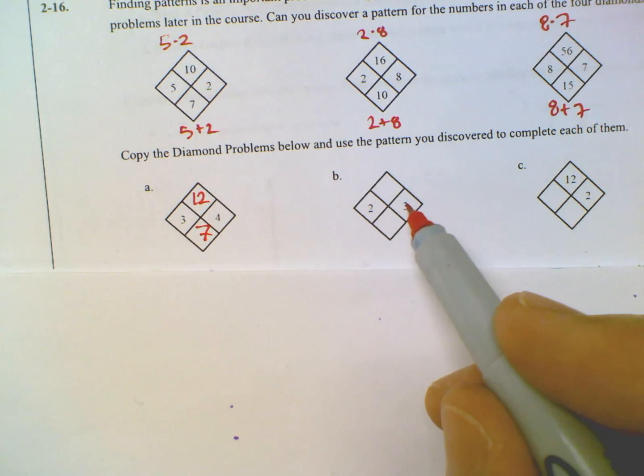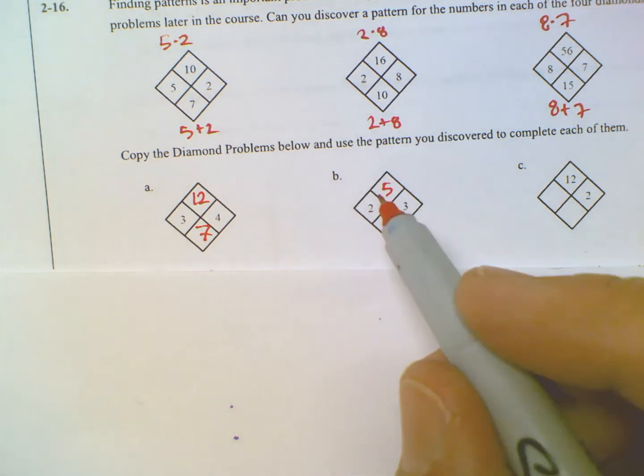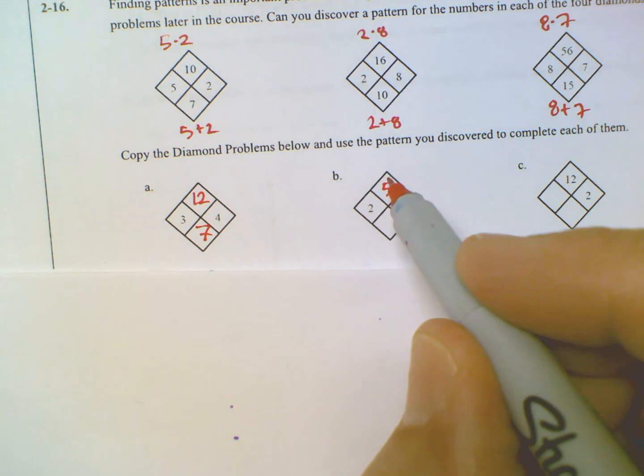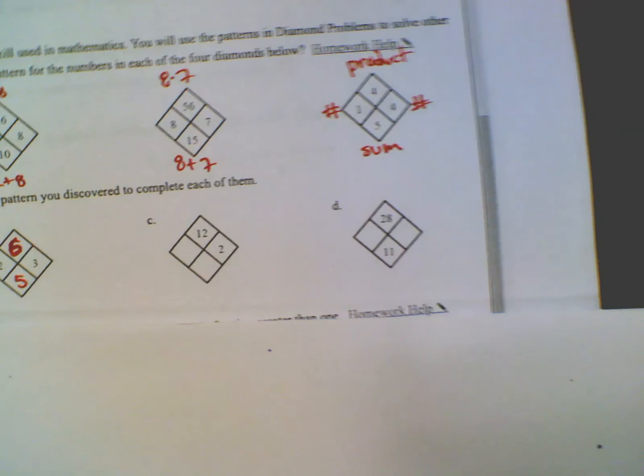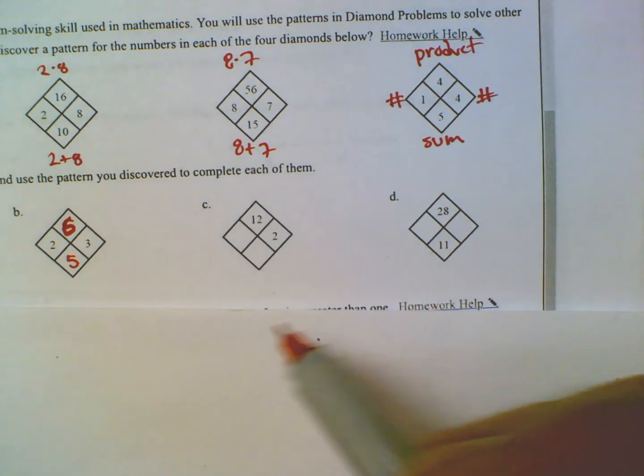This one here, 2 plus 3 is 5. Whoa, oops, I did it wrong. See, look at that. It's 2 times 3 on top is 6. And then 2 plus 3 on the bottom is 5. Okay? Product on top, sum on the bottom.